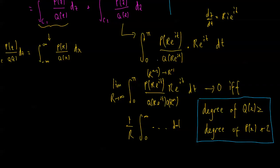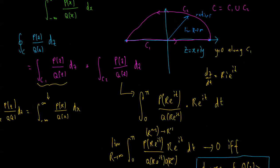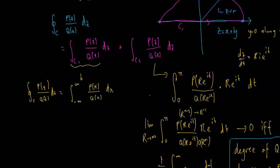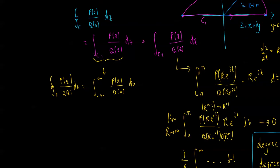Then along the arc c2 that integral will go to 0 and we're left with this result, and that's the result we made.